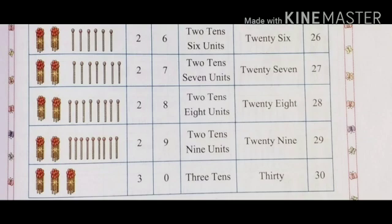Two bunches of math sticks means 20 math sticks. With 6 math sticks: 26. That is 2 tens and 6 units — 26. The spelling of 26 is T-W-E-N-T-Y (20) S-I-X (6): 26.